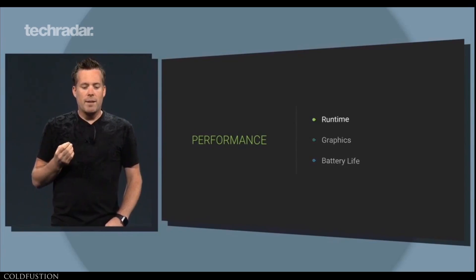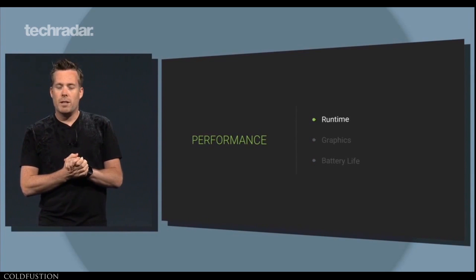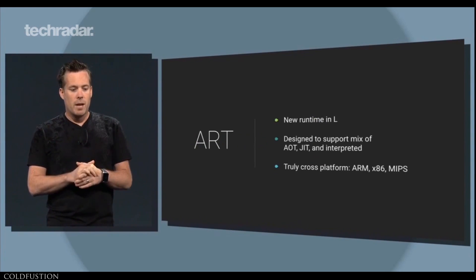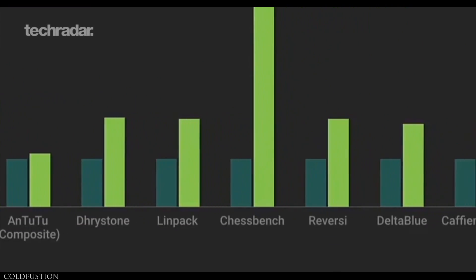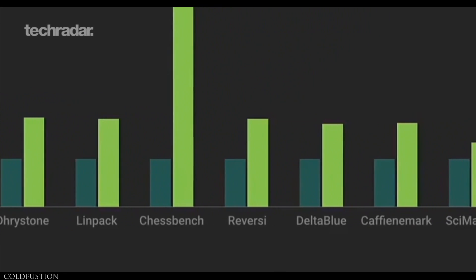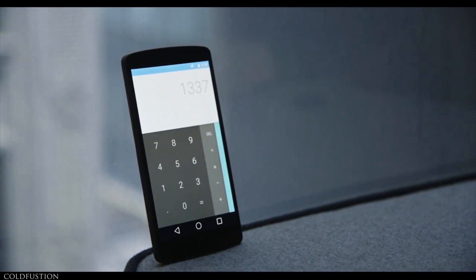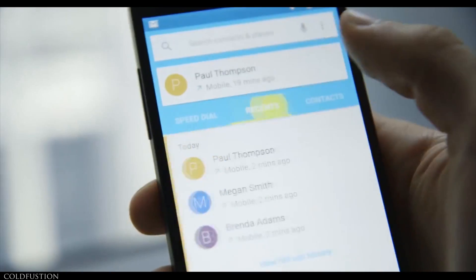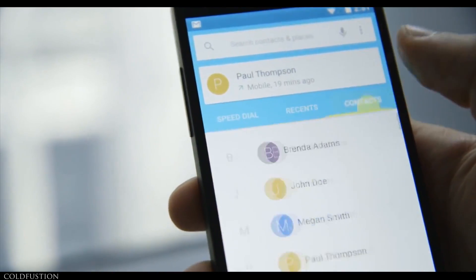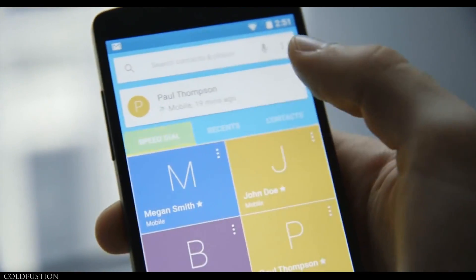Under the hood, ART Runtime is here to stay, and Google is claiming up to two times performance improvement on some applications. ART is also embracing the 64-bit era of mobile, which is great to see. There was also talk about Android moving beyond mobile into other areas such as the automotive industry and wearables.